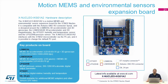In the second example, we combine the Nucleo F401 with the MEMS expansion board. This expansion board contains four different components: a 3D accelerometer plus 3D gyroscope, a 3D magnetometer plus 3D accelerometer, a pressure sensor, and a humidity and temperature sensor. All these sensors are connected to the main MCU via an I2C interface. The expansion board also has a DIL24 connector that can be used to add support for other MEMS sensors in the future.